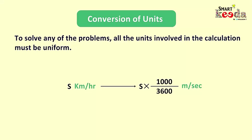We just need to take the simplest form of this fraction which is 5 by 18, and we need to multiply it into the given speed to find the speed in meter per second. And while converting a speed given in meter per second into kilometer per hour, we will take inverse of the fraction which will be 18 by 5, and we will multiply it into the given speed.